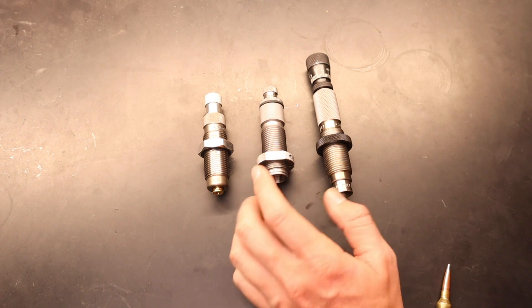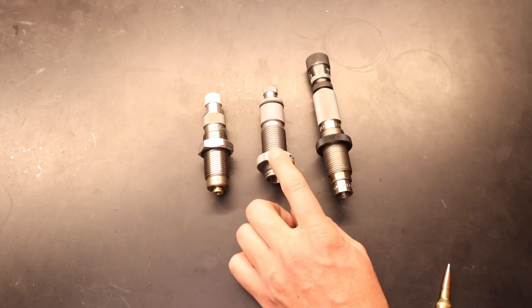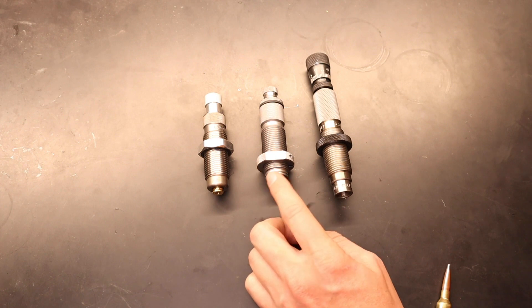On the Hornady dies, it is a semi-universal die. I like the interchangeability of the seating stem. But I really don't like how much wiggle room there is when something is getting seated.